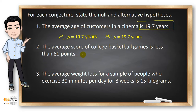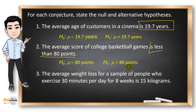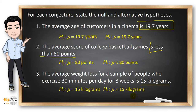In number two, the average score of a college basketball game is less than 80 points. Since less than was mentioned, the alternative hypothesis is less than 80 points. In number three, the average weight loss for a sample of people who exercise 30 minutes per day for eight weeks is 15 kilograms. Like in number one, the alternative hypothesis is not equal to 15 kilograms.